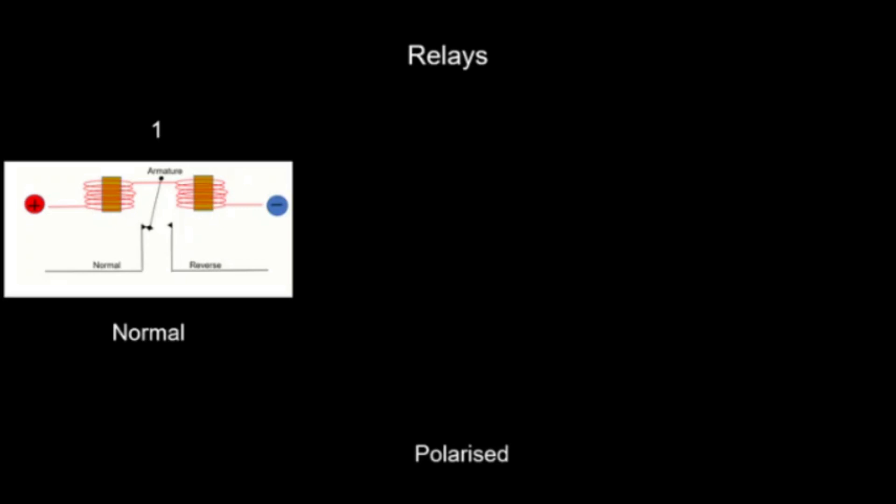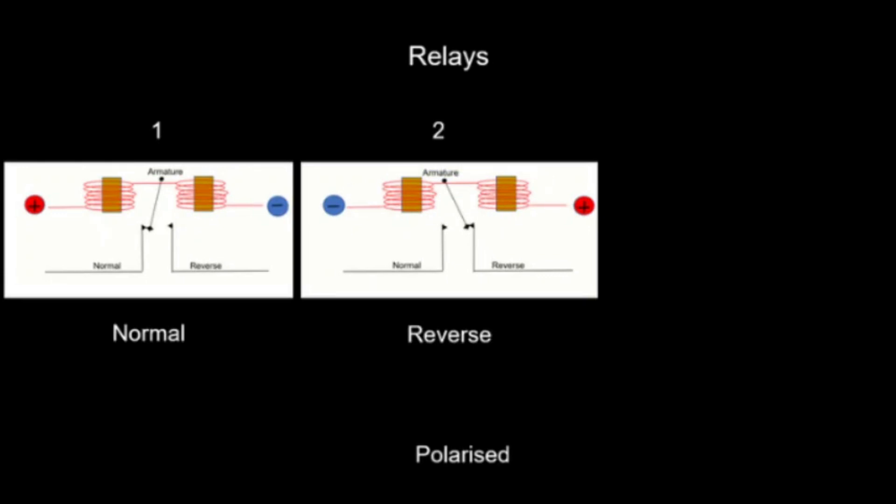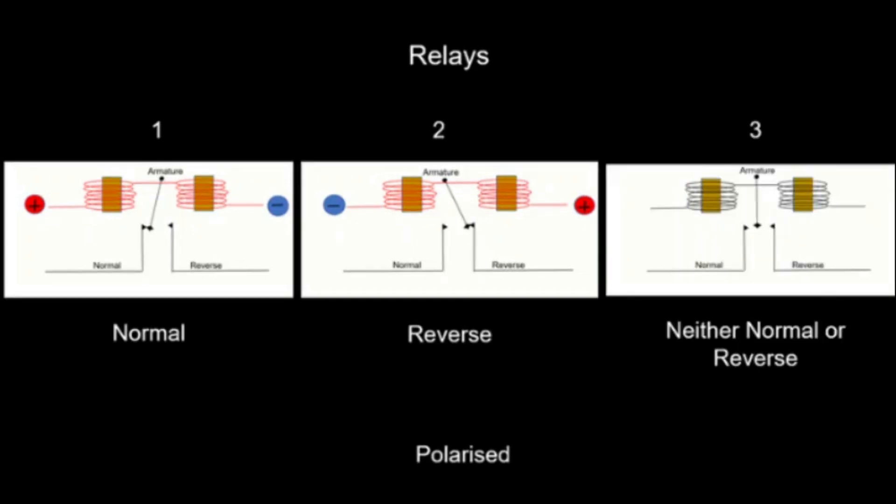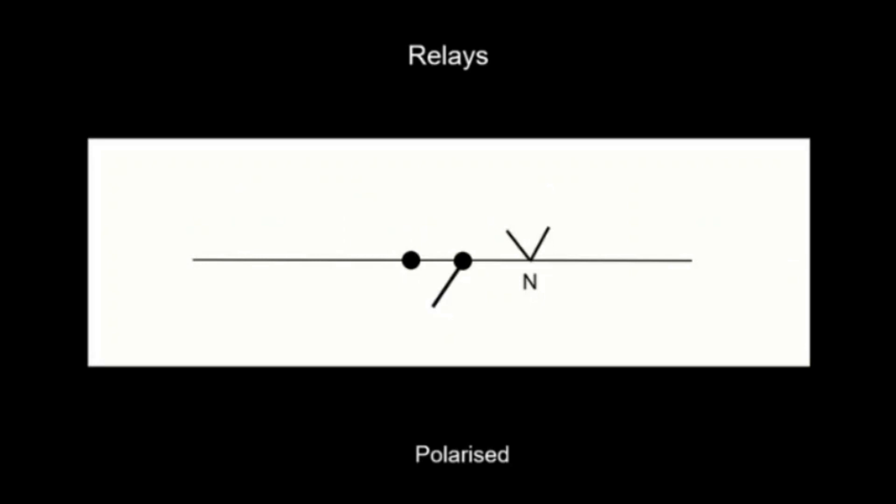If polarised in one direction, the armature connects with the contact known as normal. If the polarity is reversed, it connects with the reverse contact. Or it is not connecting with either normal or reverse when there is no current flow. This is how a polarised relay contact is shown in signaling diagrams.